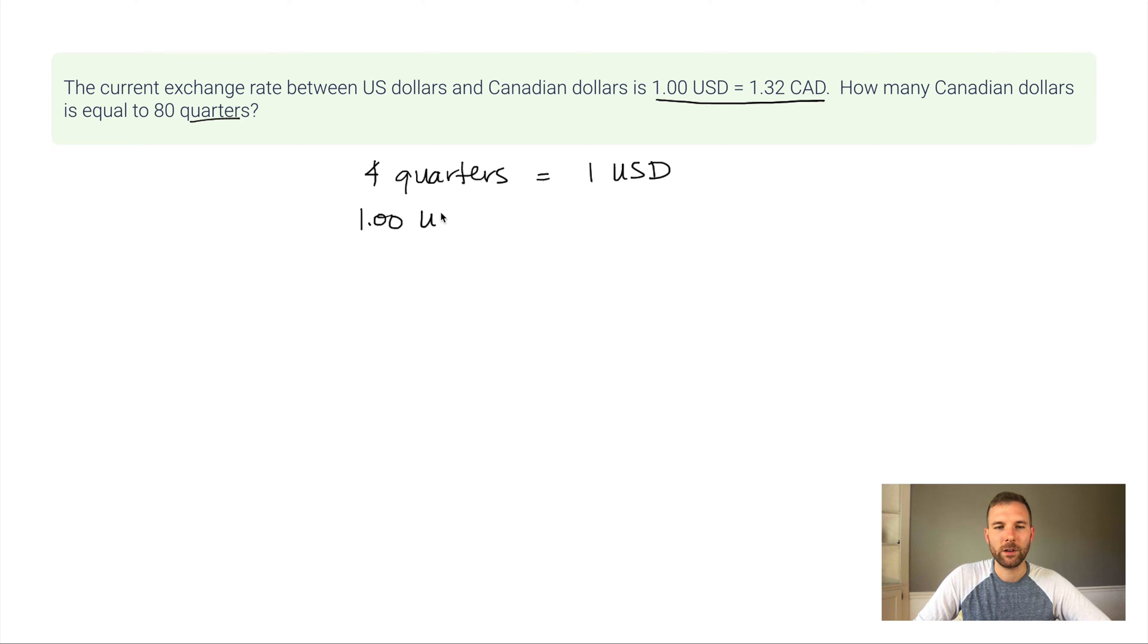We know that there are four quarters in one US dollar. And then this is my other conversion factor here. One US dollar, and this is true of today's date, I just googled this, is 1.32 Canadian dollars. So in this problem I'm going to use two conversion factors and let me show you how I'd set that up. I want to start with this information because 80 is what I want to convert into Canadian dollars. 80 quarters into Canadian dollars and these are the two relationships I'm going to use to help me do that.